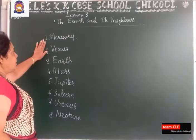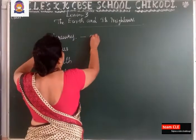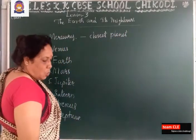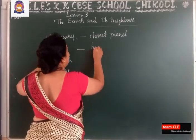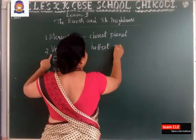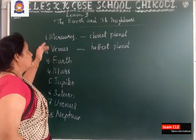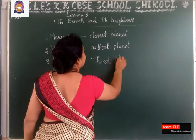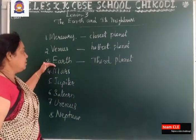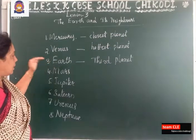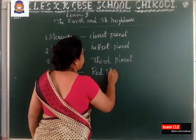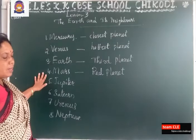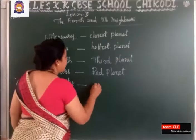Mercury is the first planet and it is the closest planet to the sun. Venus is the second planet from the sun and it is the hottest planet. Earth is the third planet from the sun — this is where we are living. Mars is the fourth planet and it is also called the red planet. Jupiter is the largest planet in the solar system.